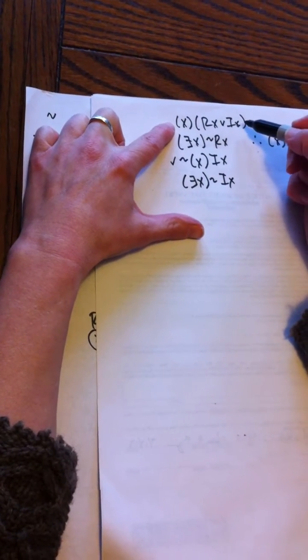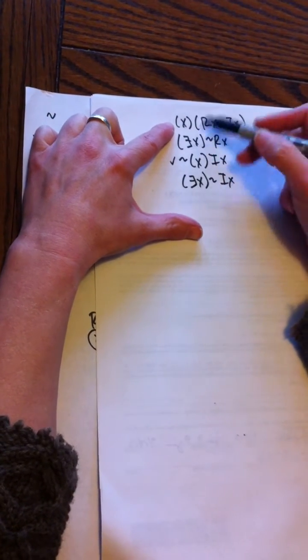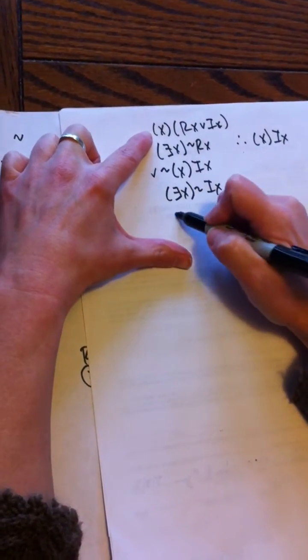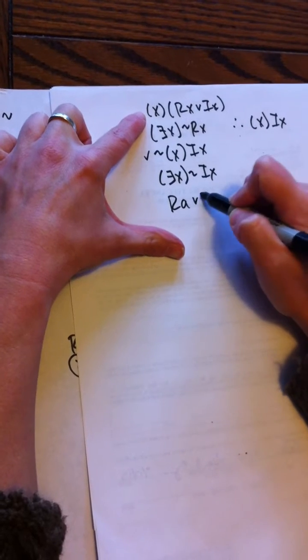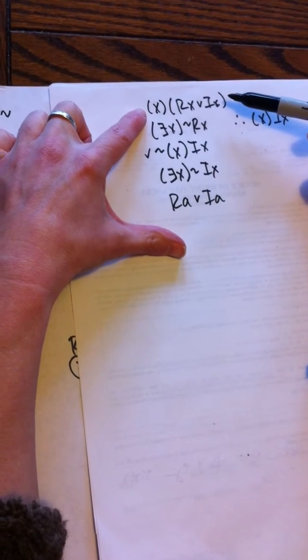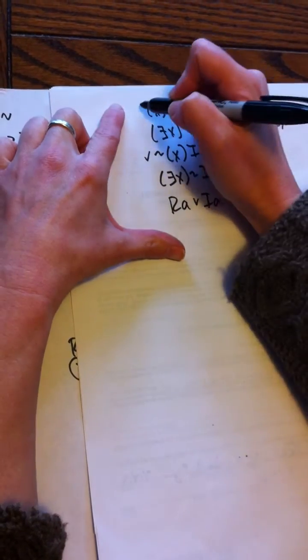so I'm going to do the universal. When I'm doing the universal, there are no letters a through w, so I get to choose whichever one I want: Ra or Ia. So whenever a universal you do first, you get to pick one, and I'm going to put an a there to remind myself that I've instantiated it with a.